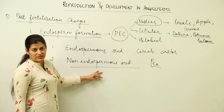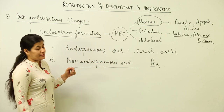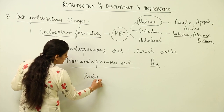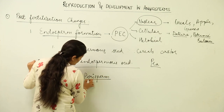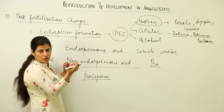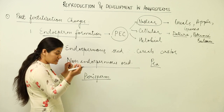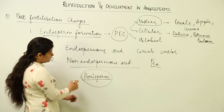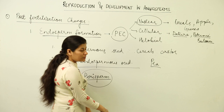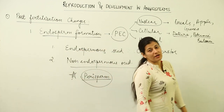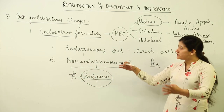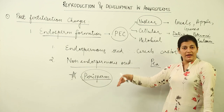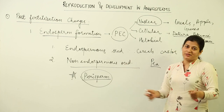Sometimes, even though the endosperm crushes the nucellus cells, the nucellus persists in the seed. Such persistent nucellus remaining within the seed is known as perisperm. Even after the endosperm tries to crush it, the nucellus sustains and is called perisperm. With this term, we conclude the lesson on endosperm.